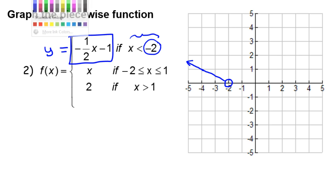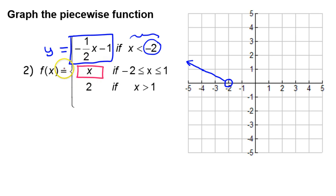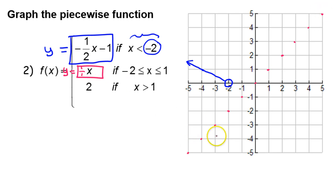Now let's move on to the middle piece — it just says x, so I'll think of it as y equals x. The line y equals x is a diagonal line going through the origin with a slope of one over one and a y-intercept of zero. You may have memorized that y equals x is the diagonal line going right through the middle of the graph.